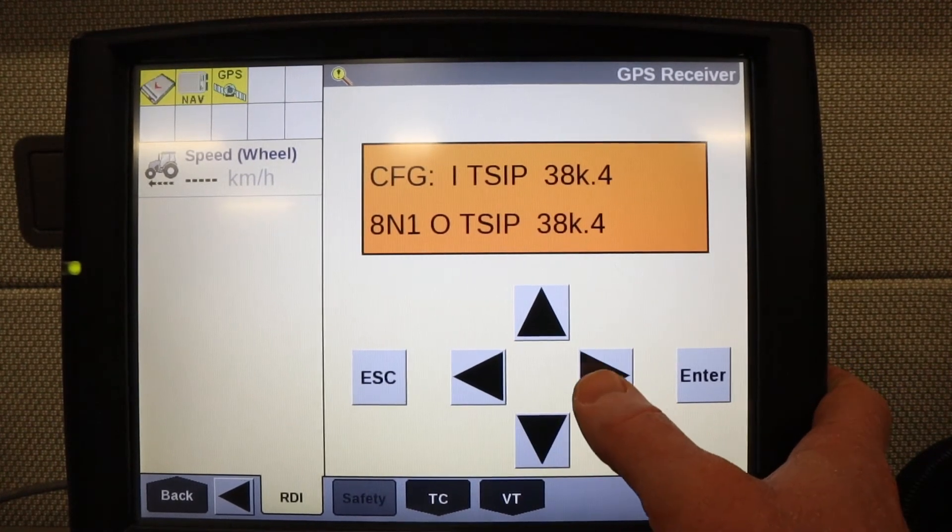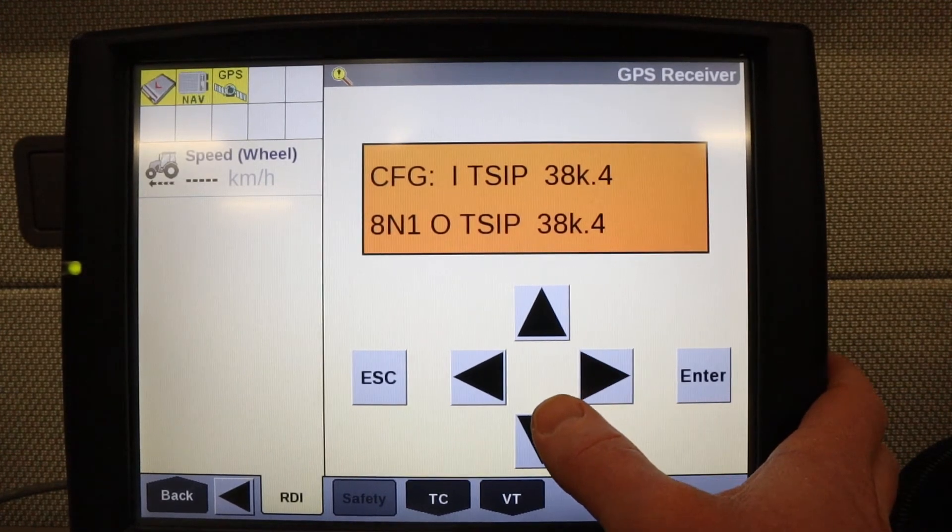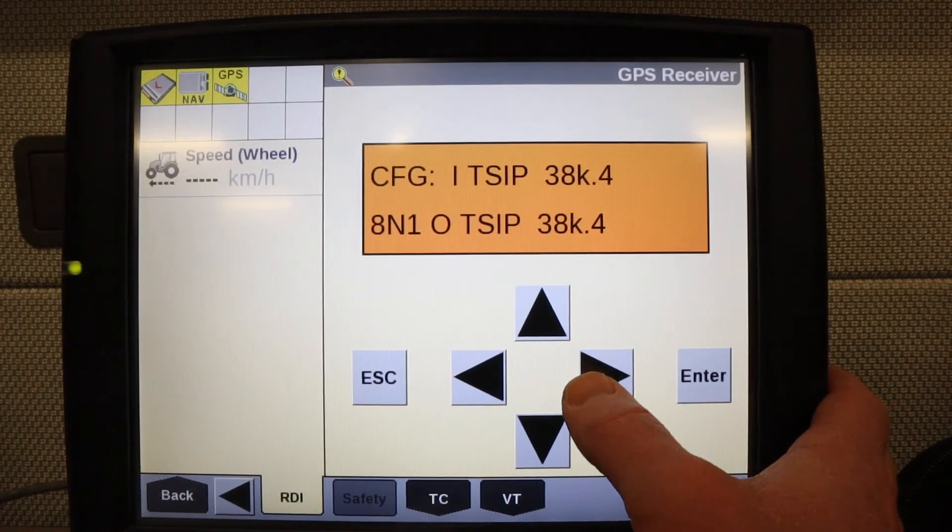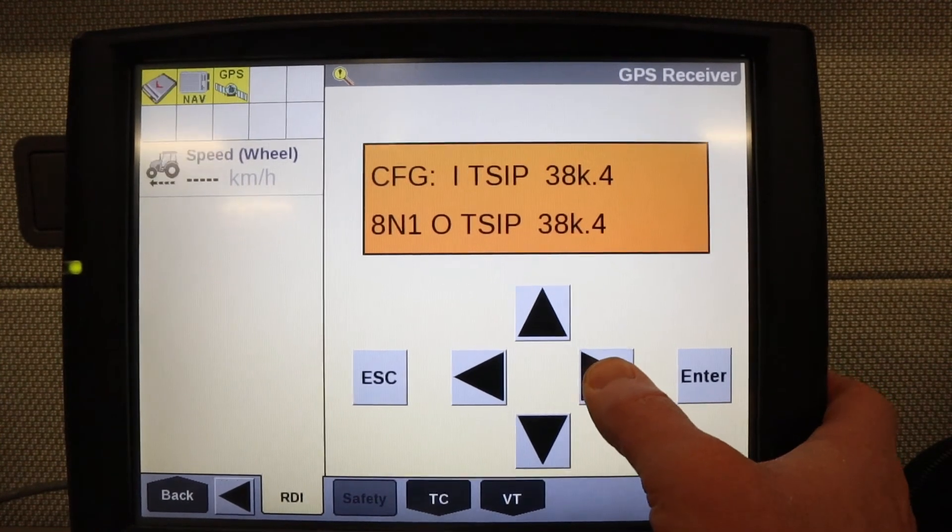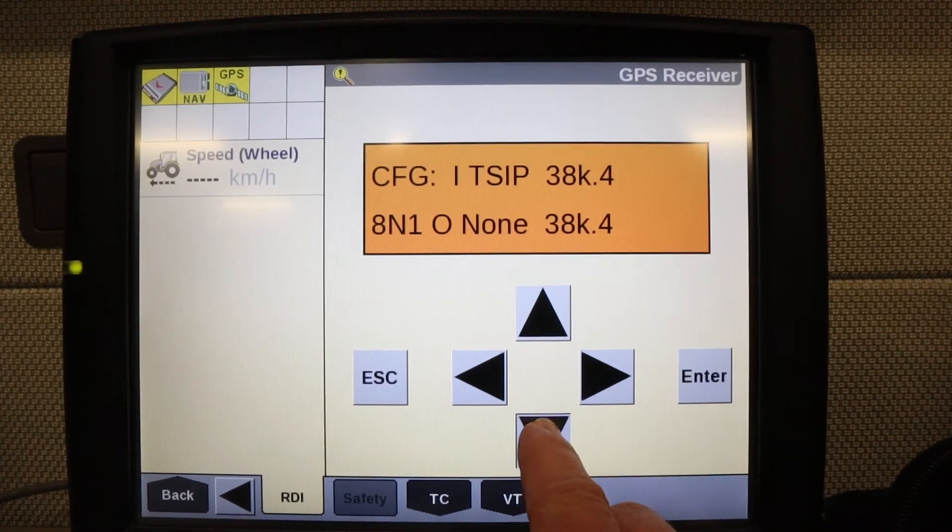Then I need to get a cursor, so I'm going to press the right arrow. Now I need to move that cursor to some of the other options. I'm going to continue to press the right arrow until I get to this TSIP option that I want to change to say NEMA.